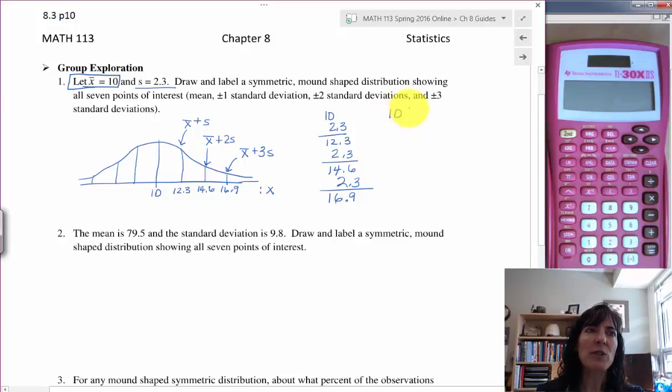Now you could also go back to the start and say, well I want to do 10 plus 2s. That's fine. You can do 10 plus 2 times 2.3 because that's my s. 2 times 2.3 is going to be 4.6, and we can add that to 10 and we will get 14.6. So that's the other way of finding this point, 14.6.